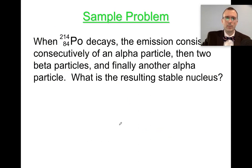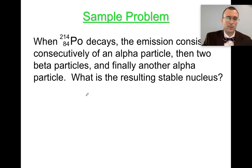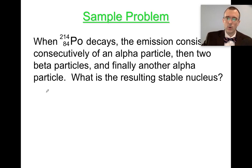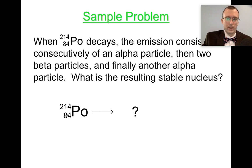Let's try a couple of sample problems. Polonium-214 is extremely dangerous and highly toxic. When polonium-214 decays, the emission sequence consists of one alpha particle, then two beta particles, and finally one more alpha particle. What is the resulting stable nucleus? We want to go through all these different decays step by step and see what it turns into. Go through them step by step rather than trying to do it all at once.